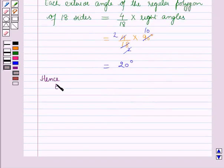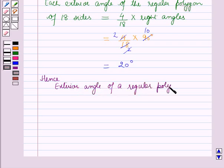Hence exterior angle of a regular polygon of 18 sides is equal to 20 degrees.